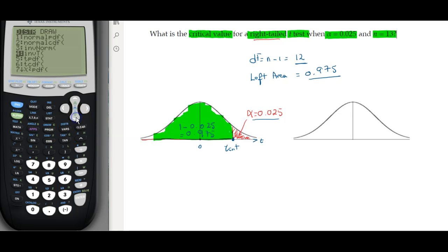I'll go to inverse t, which is number 4, and press enter. The area I'm looking for is 0.975, and the degree of freedom is 12. Press enter, paste, enter, and the t-critical is 2.179. That was the first method. The second method,